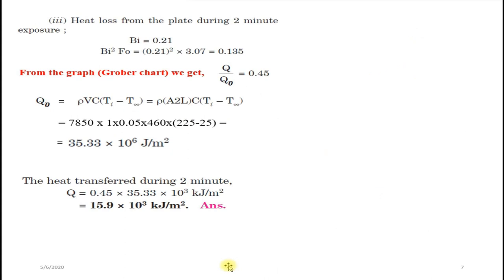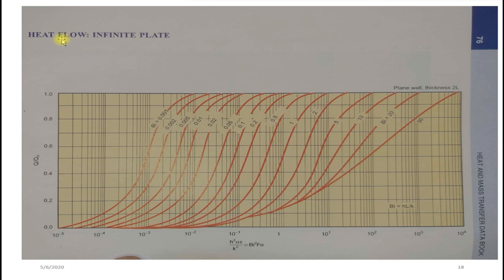Now we find the heat loss from the plate during 2 minutes of exposure using the third graph of the infinite plate. The third graph (also called Gröber chart) relates to heat flow. For this we need the Biot number squared times the Fourier number, and the Biot number, to find the q/q₀ value.